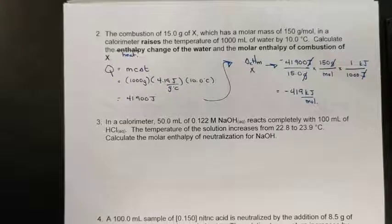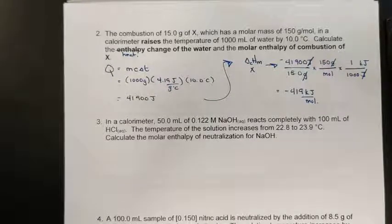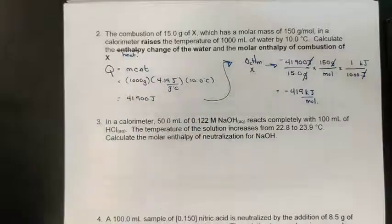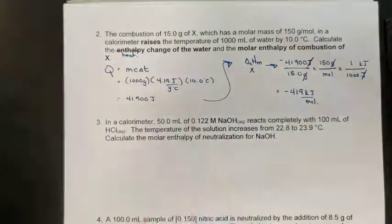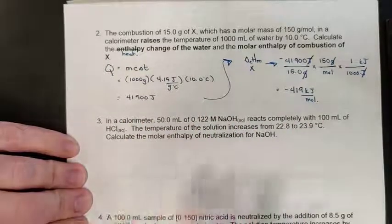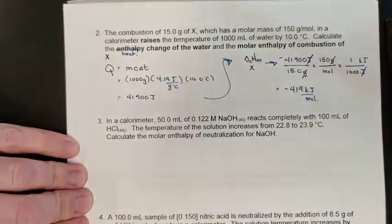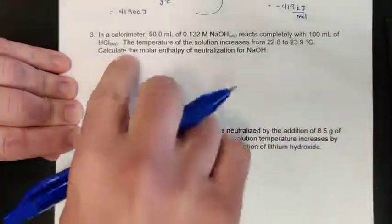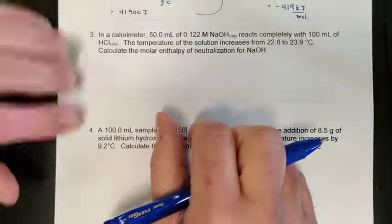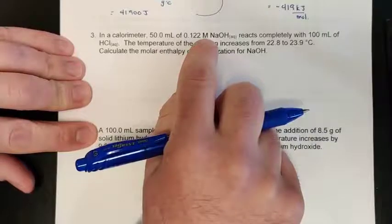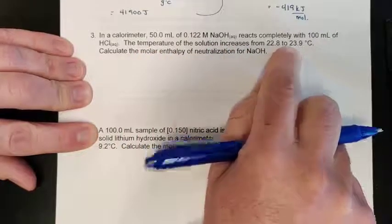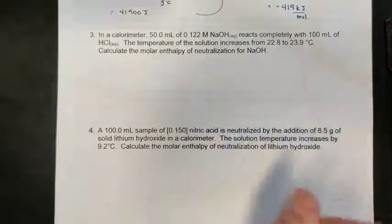For the remaining examples I'll switch to a full factor label method. If you want to stick with the formula, you can — just keep it organized on the page. Doing everything through unit conversion will make more sense as we start relating it to balanced chemical equations. Let's do one more example in this video.